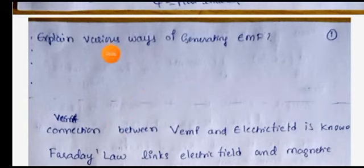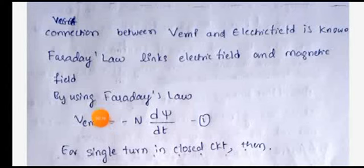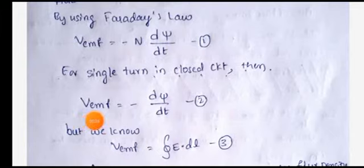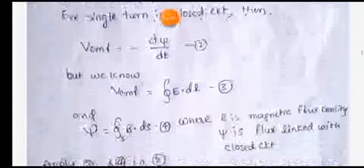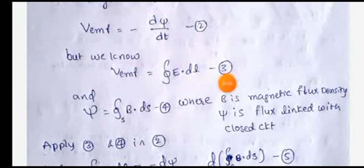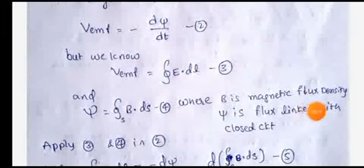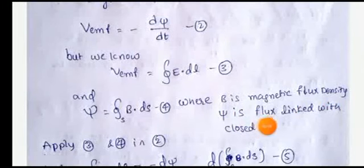The topic is various ways of generating EMF. From Faraday's law, we can write EMF equal to minus N into d-phi by dt. For a single turn, N becomes one, so EMF equals minus d-phi by dt. We know that EMF equals the closed line integral of E dot dl, and magnetic flux phi equals the closed surface integral of B dot ds, where B is magnetic flux density.